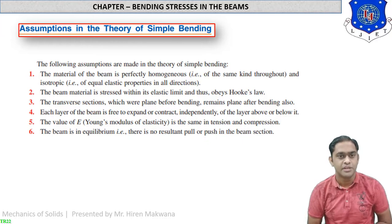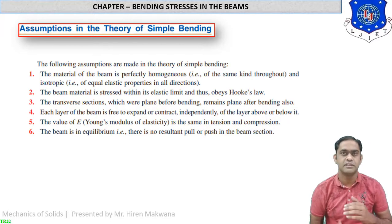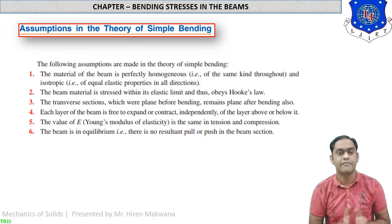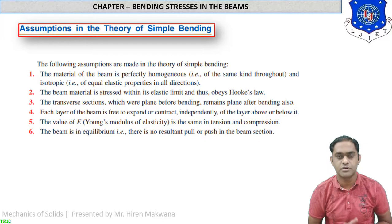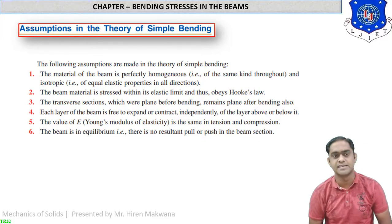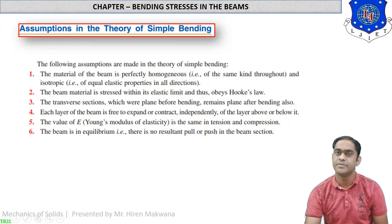Number 4: each layer of the beam is free to expand or contract independently of the layer above or below it — meaning each and every layer is independent and can independently expand or contract. Number 5: the value of Young's modulus or modulus of elasticity is the same in tension and compression. Number 6: the beam is in equilibrium — there is no resultant pull or push in the beam section.